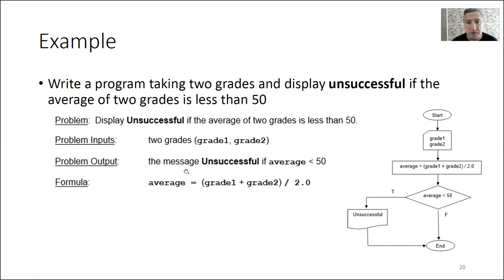We had this example where we get two grades from the user, find the average, and if the average is less than 50, we print out 'unsuccessful.' In the flowchart, we get the inputs, calculate the average, and then we have the decision point. If the condition is true we print 'unsuccessful,' but if it is false we do nothing and stop the program.